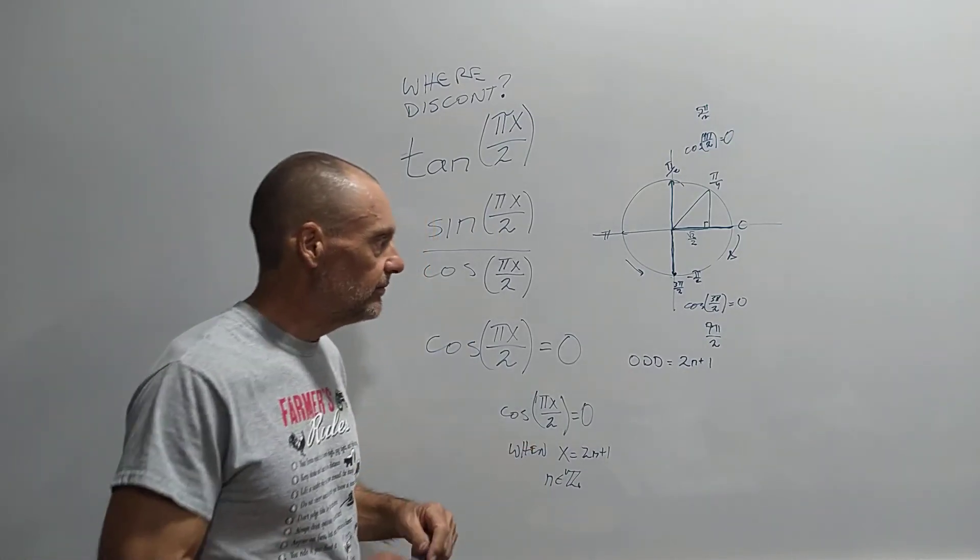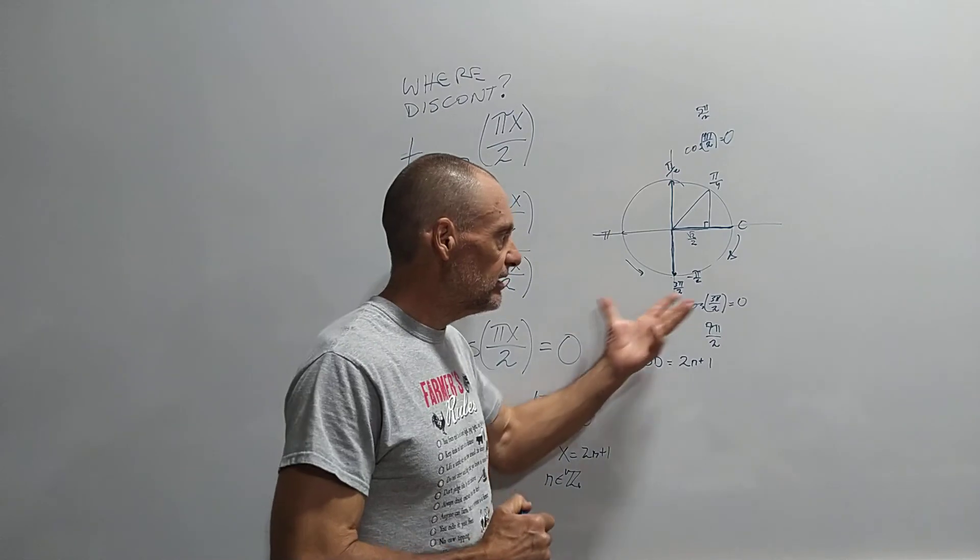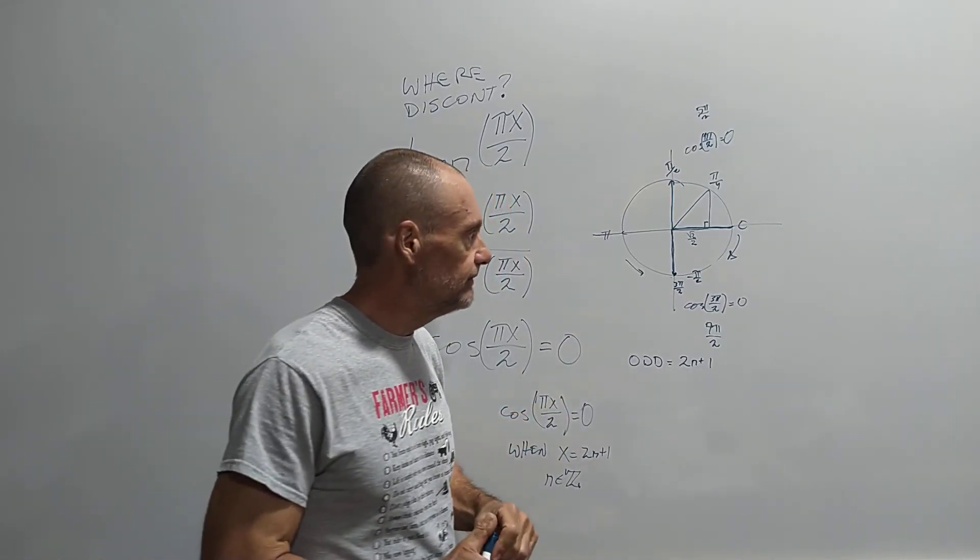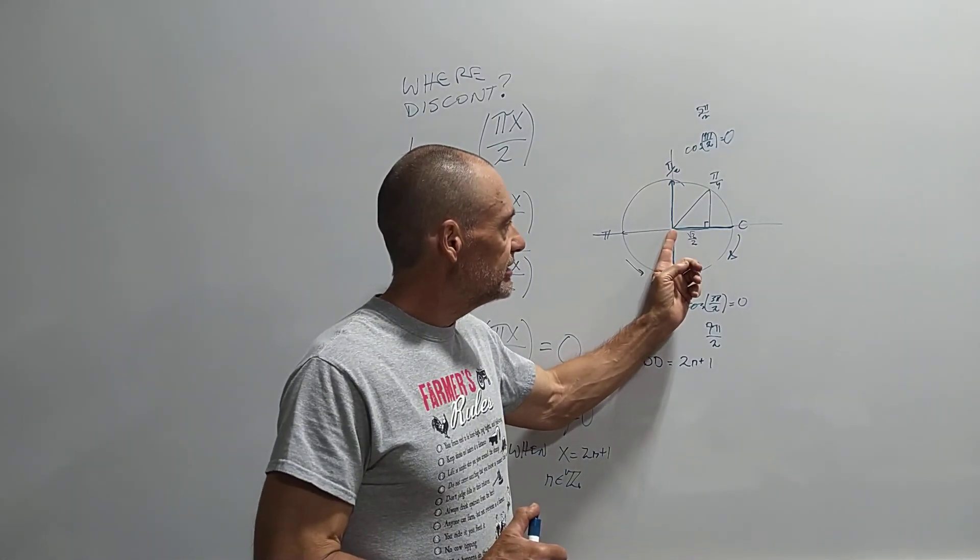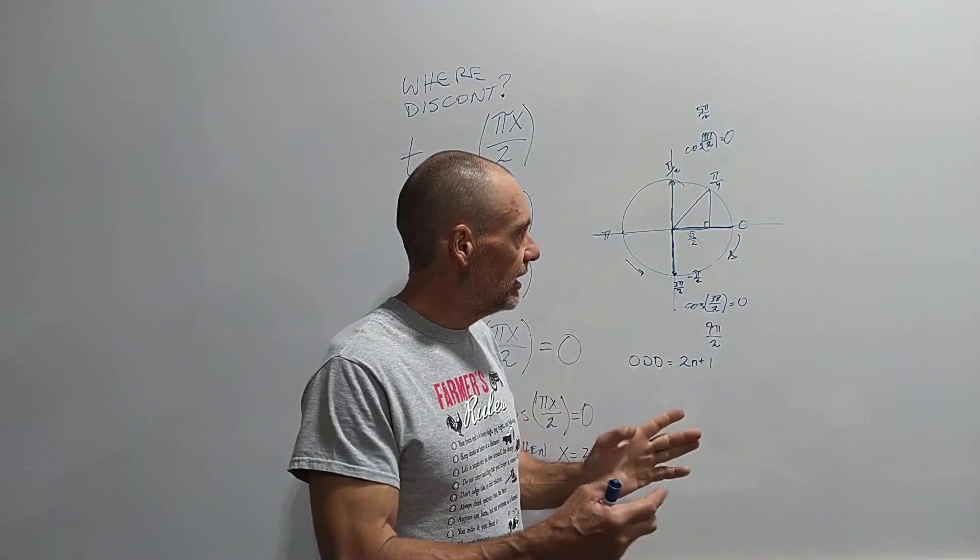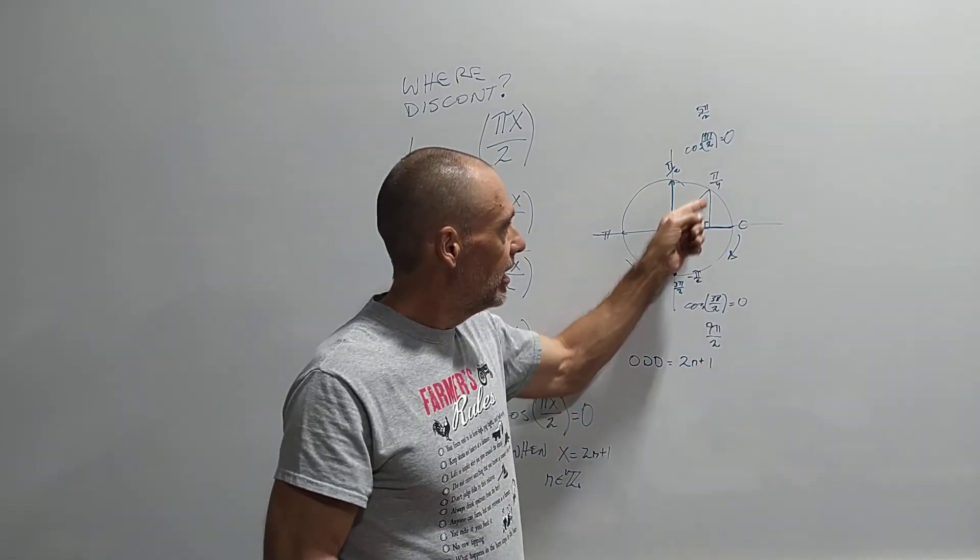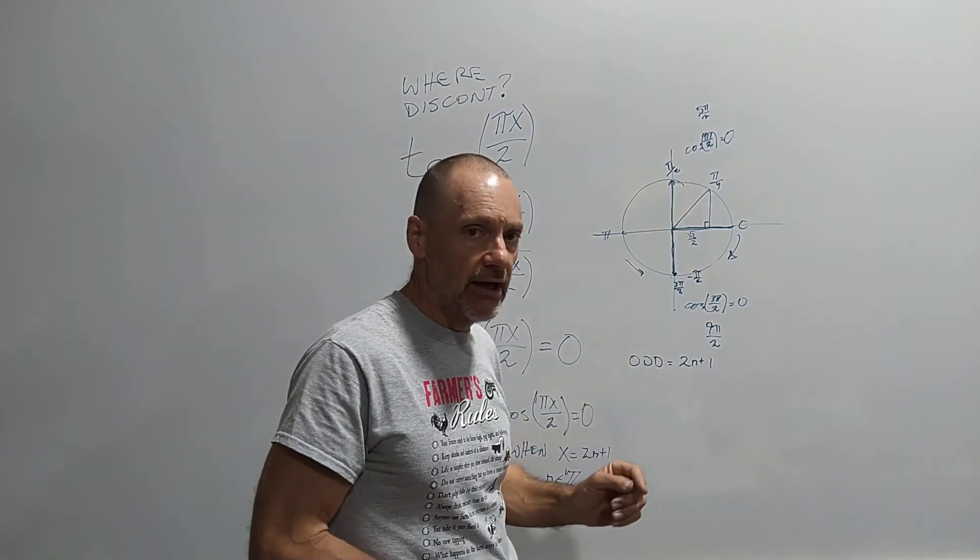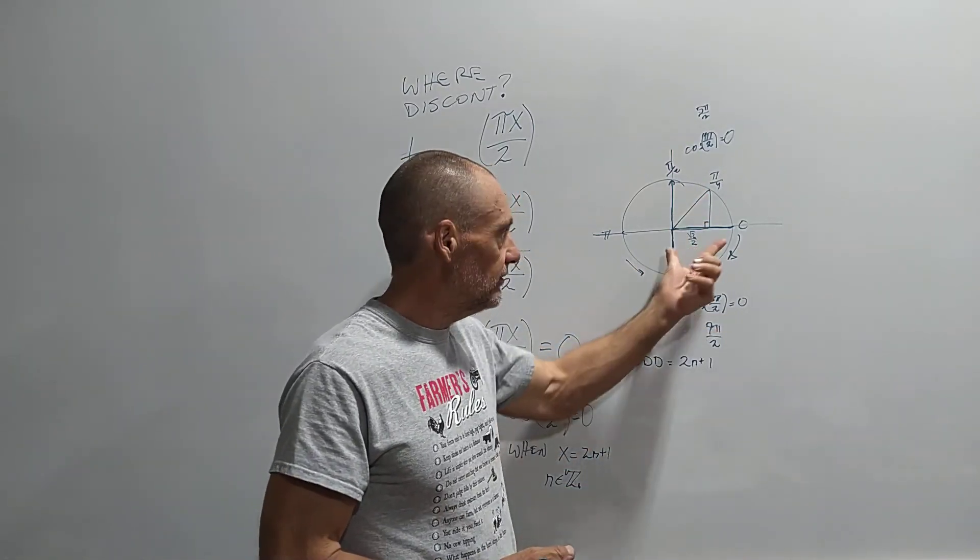So cosine, if you remember, we've got our unit circle, right? I'm going to kind of go back and review the unit circle a little bit. So cosine is this horizontal distance from the origin here to where our opposite side of our right triangle intersects the x-axis.